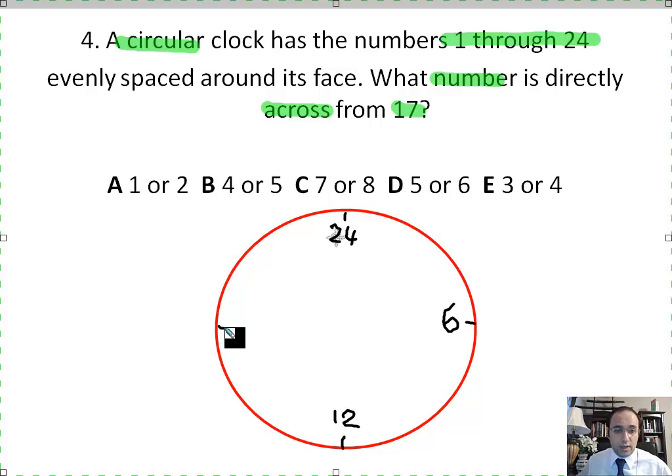And instead of 9 o'clock right here, I have the double, which is 18. So 24, 6, 12, and 18, these are the four basic numbers around this clock.